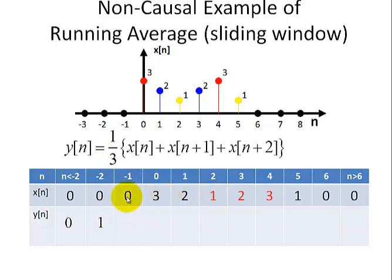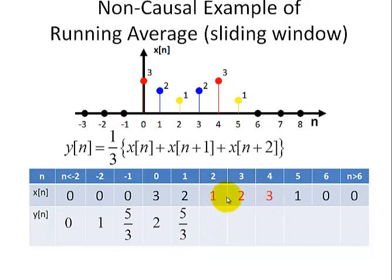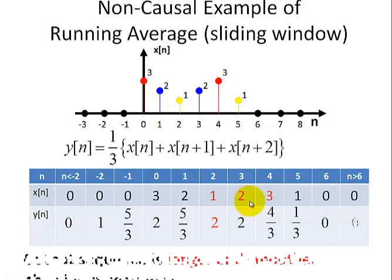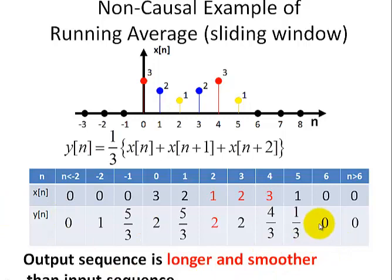Continuing the computation: the next three values give 5/3. For n equals 0, we have 3+2+1 = 6, divided by 3 gives 2. Then 2, 1, 2 gives 5/3 again. The value colored red at n equals some point is computed from 1+2+3 = 6, divided by 3, giving 2. The output sequence is longer by 1, and the values are smoother than the input — there are no changes greater than 1 like in the input sequence.